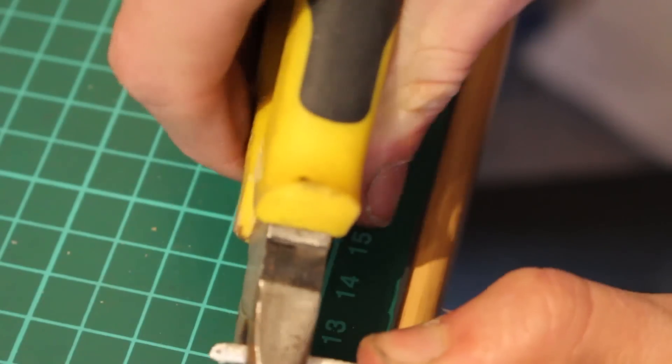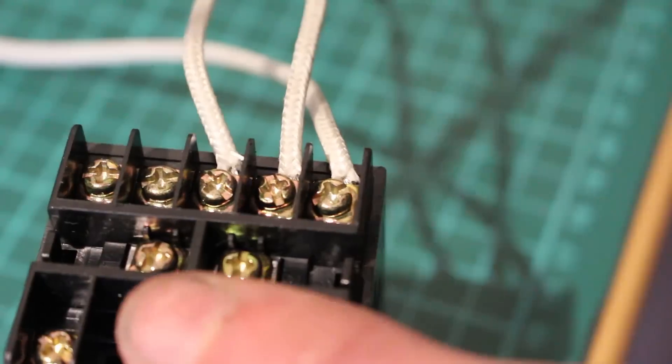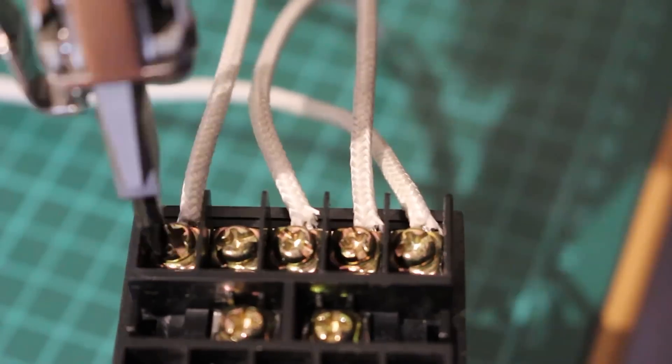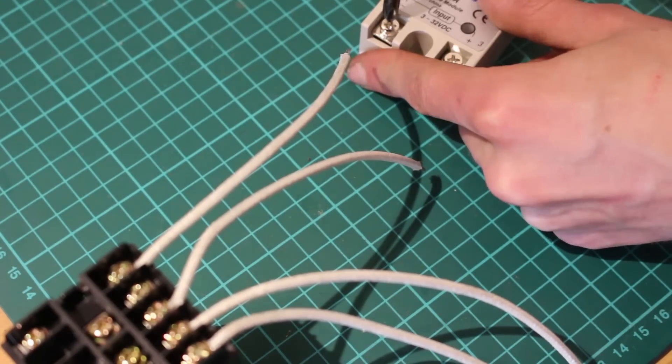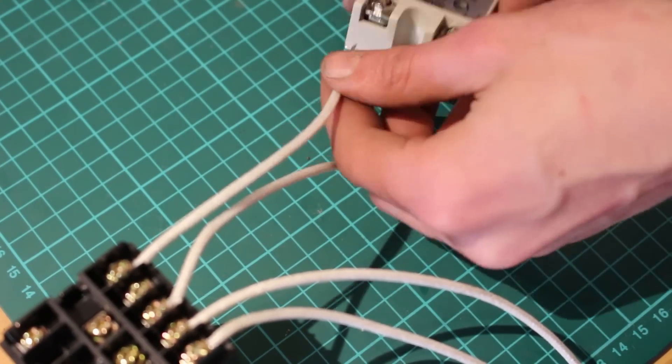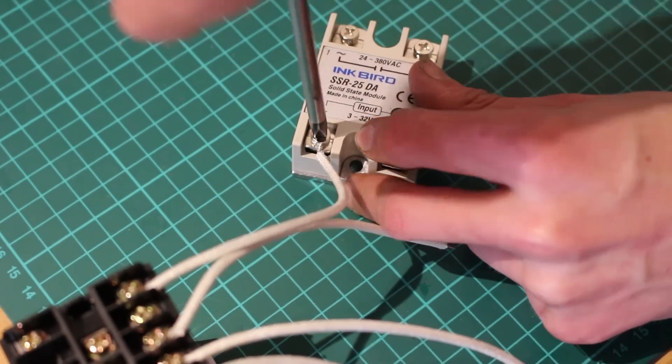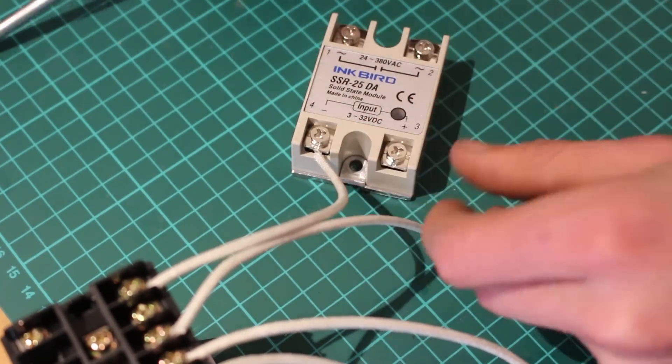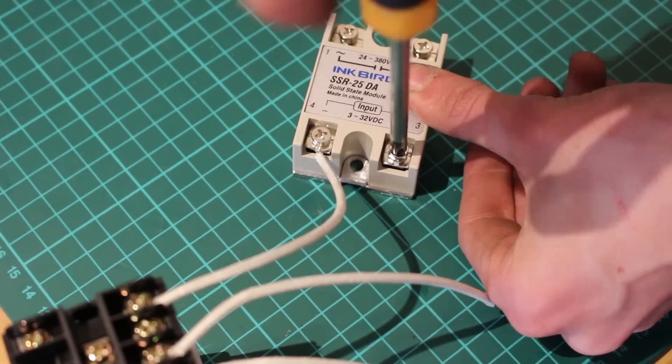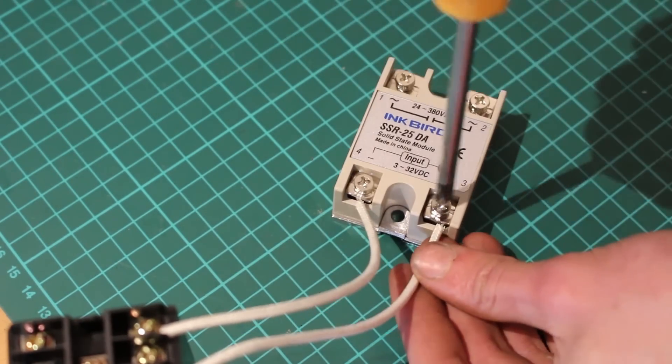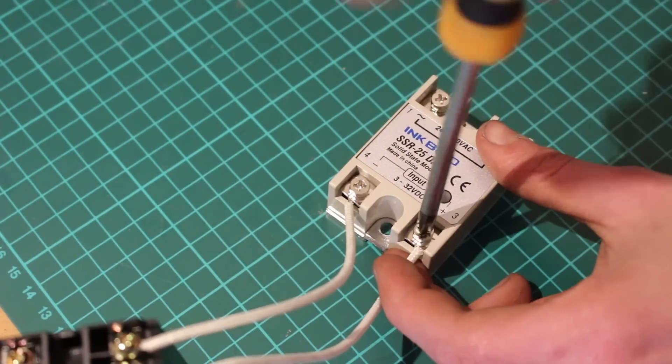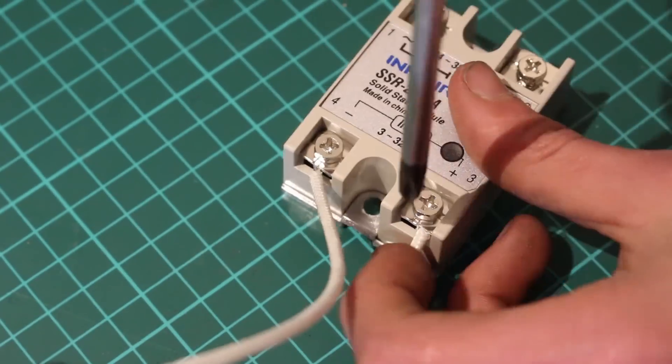I then cut, stripped, and twisted some more wire and put it into terminal 8 and 6. Terminal 6 then goes to terminal 4 on the solid state relay and terminal 8 goes to terminal 3 on the solid state relay. These are actually the output terminals from the PID and they send a small DC pulse to the solid state relay telling it whether to turn on or off, and that's what controls whether the heating coil inside the forge is on or off.